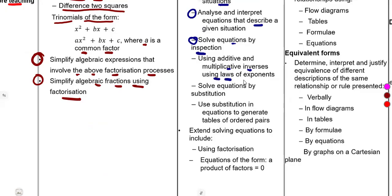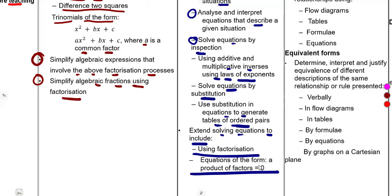Also use laws of exponents, and solve equations by substitution — use substitution in equations to generate tables of ordered pairs. Extend solving equations to include using factorization where a product of factors equals zero. You must be able to solve conditions where the product of two or three factors is equal to zero. All these term two topics are already on our channel.